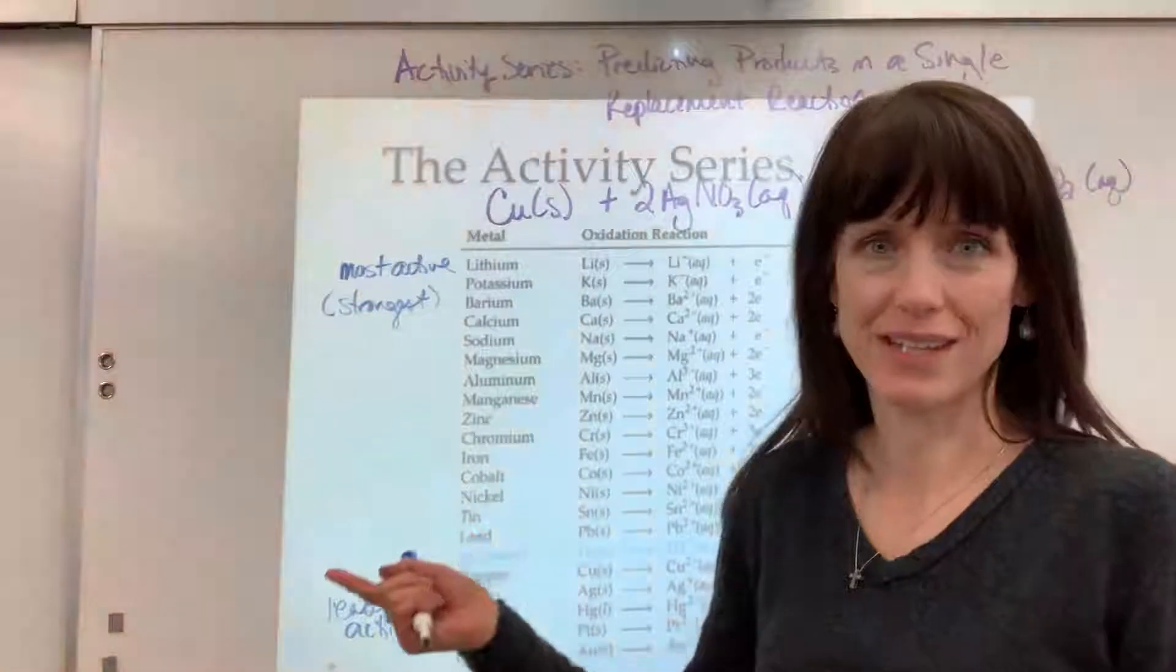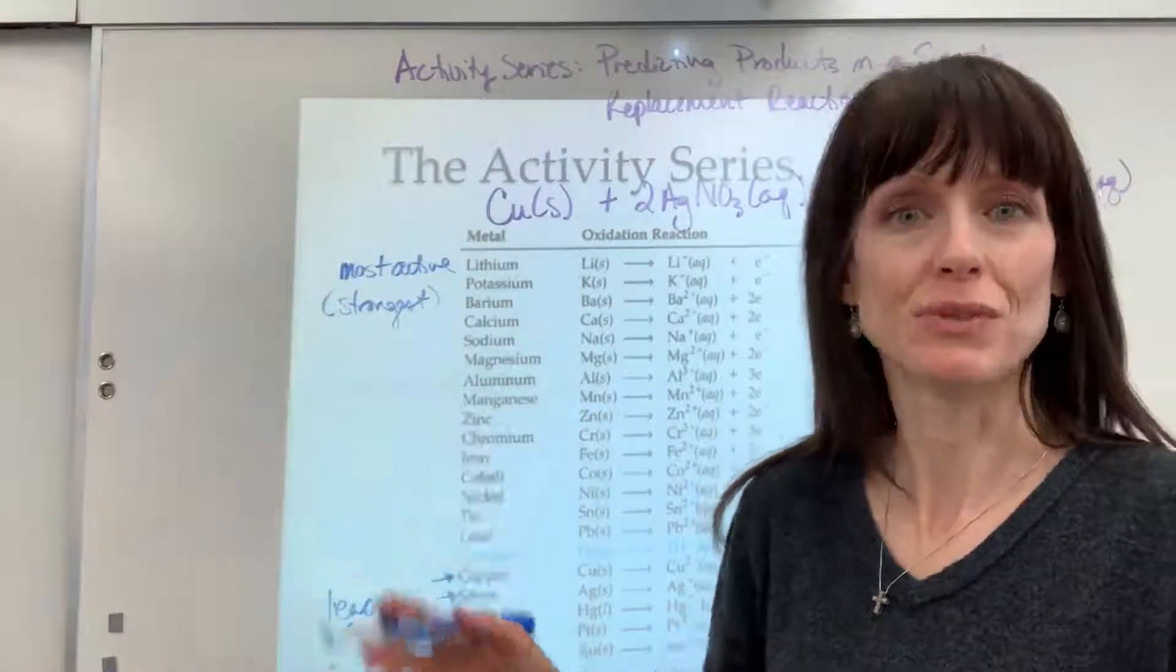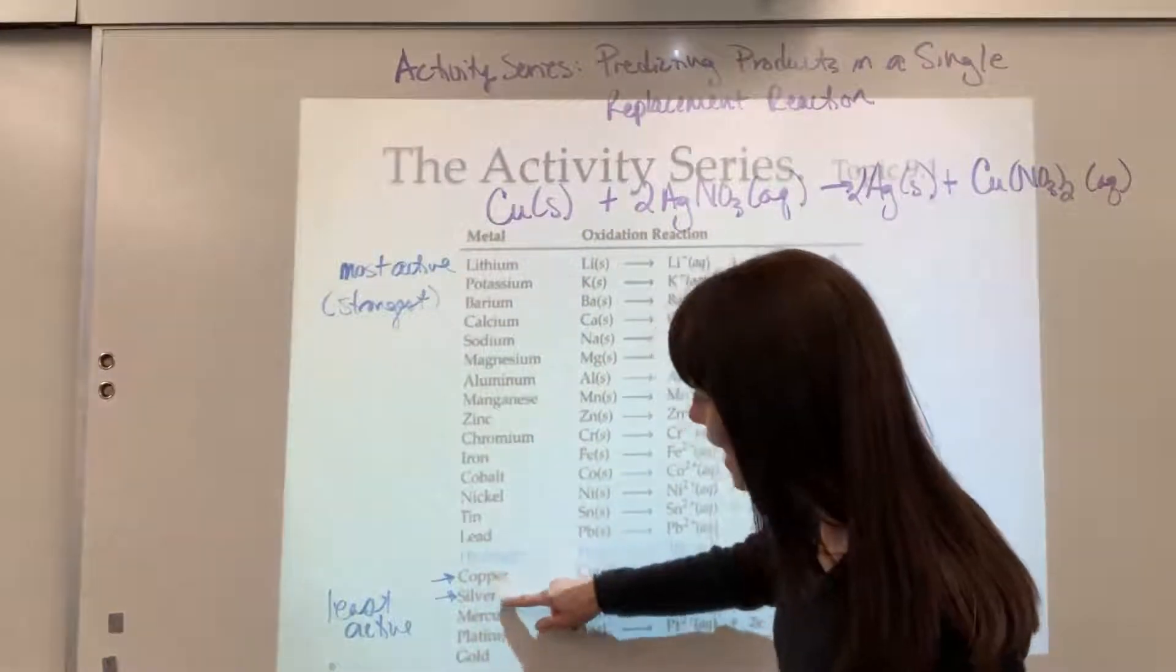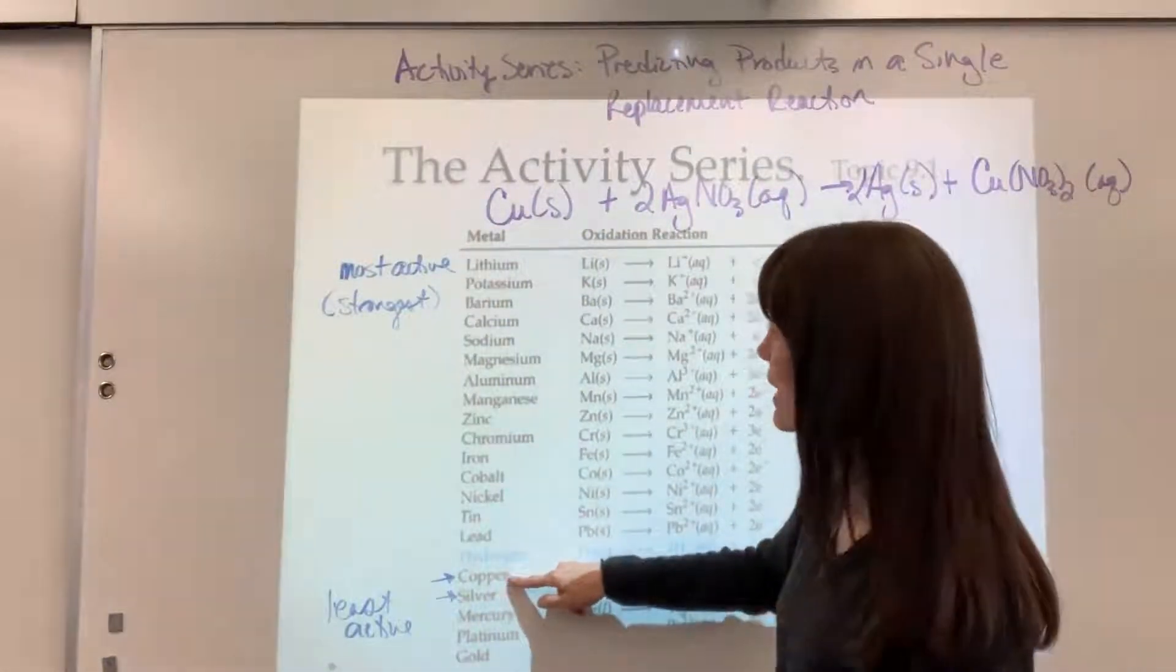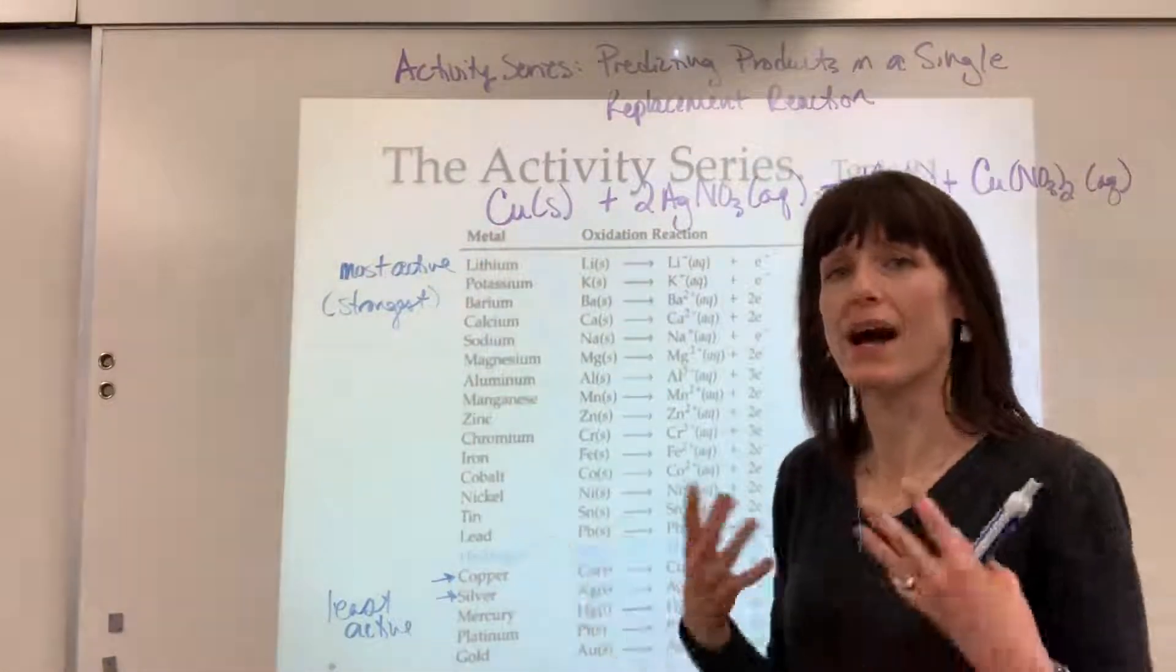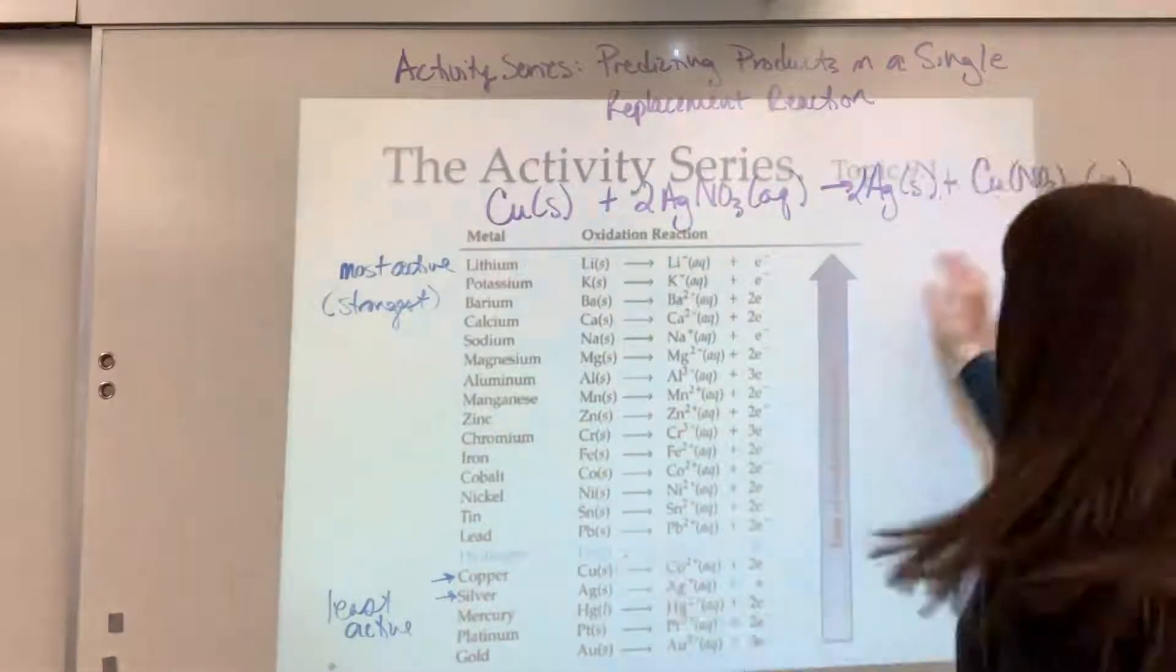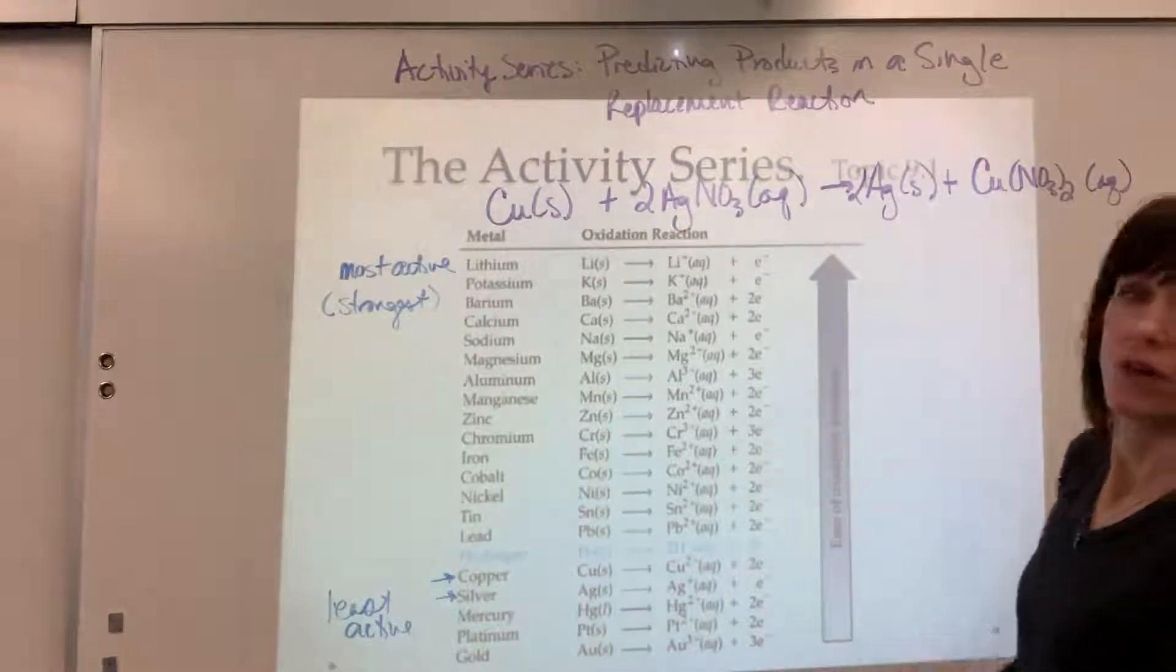The more active it is, the greater ability to replace another element. So this copper is higher than the silver, it's more active. That means the copper has the ability to kick that silver off, replace it, and go onto the compound.